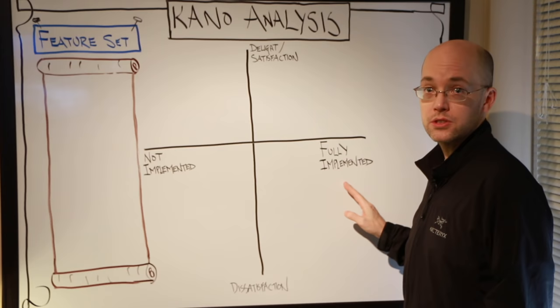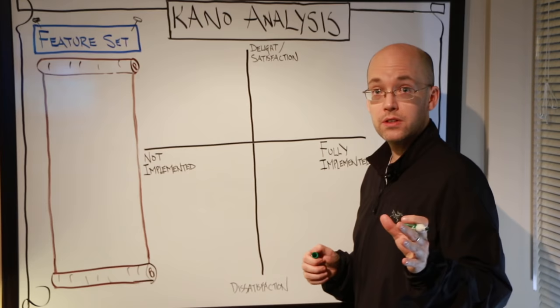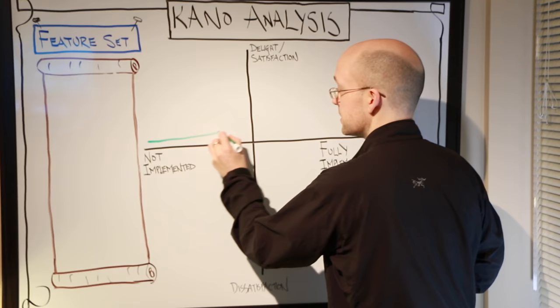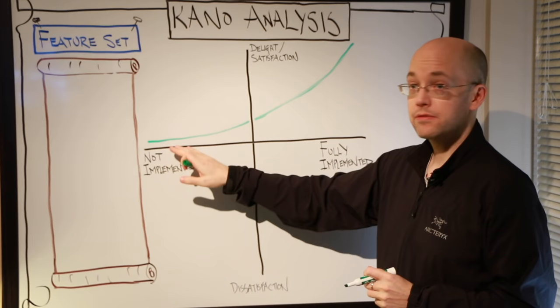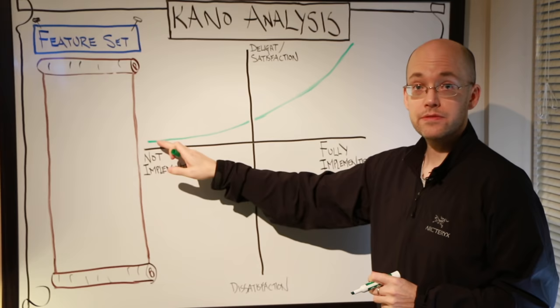Now what we'll find with the diagram is the features will fall within certain segments of this diagram. So in this segment here, the understanding is that we may have a feature that's not implemented and doesn't provide a lot of satisfaction. In this case, our customers are just not interested in that particular thing.